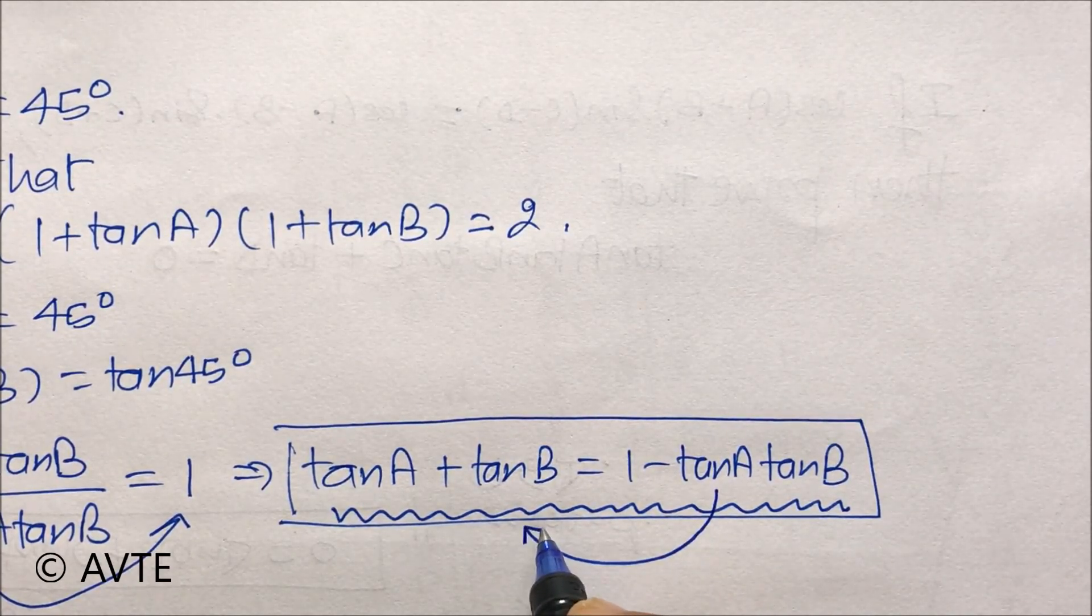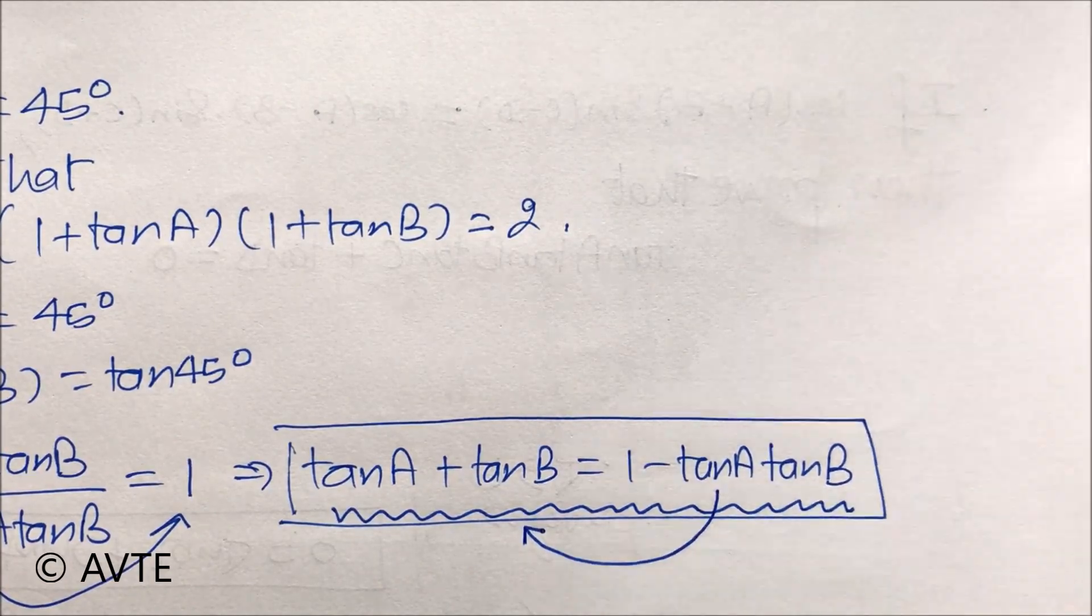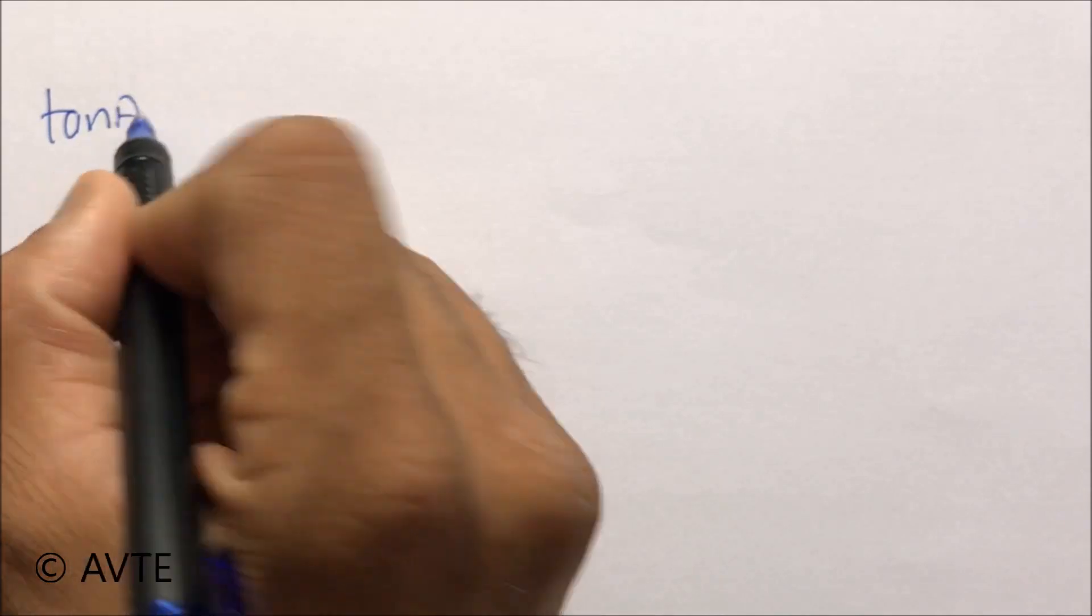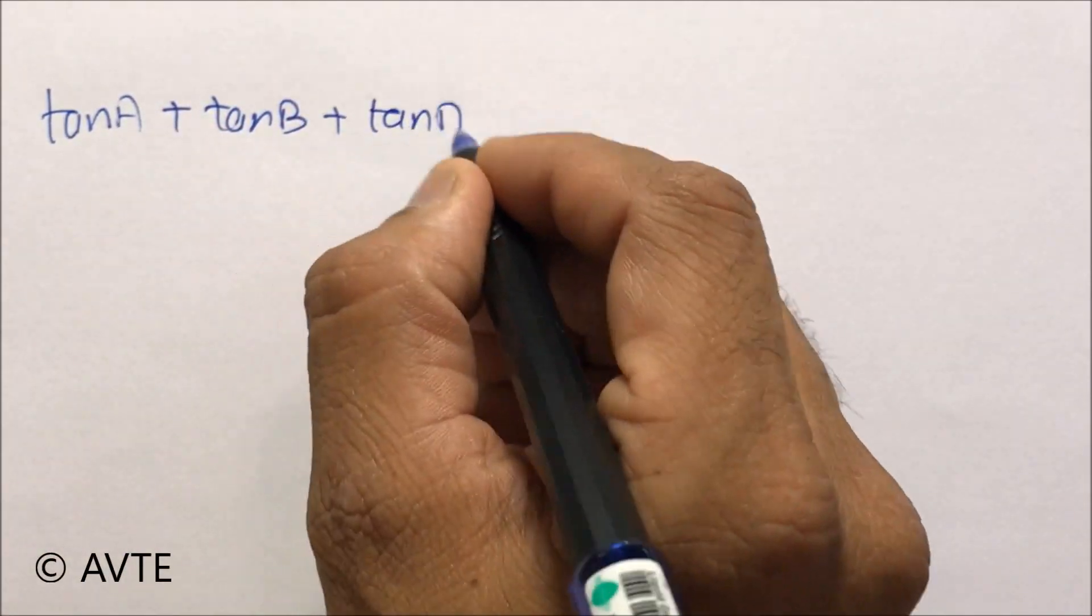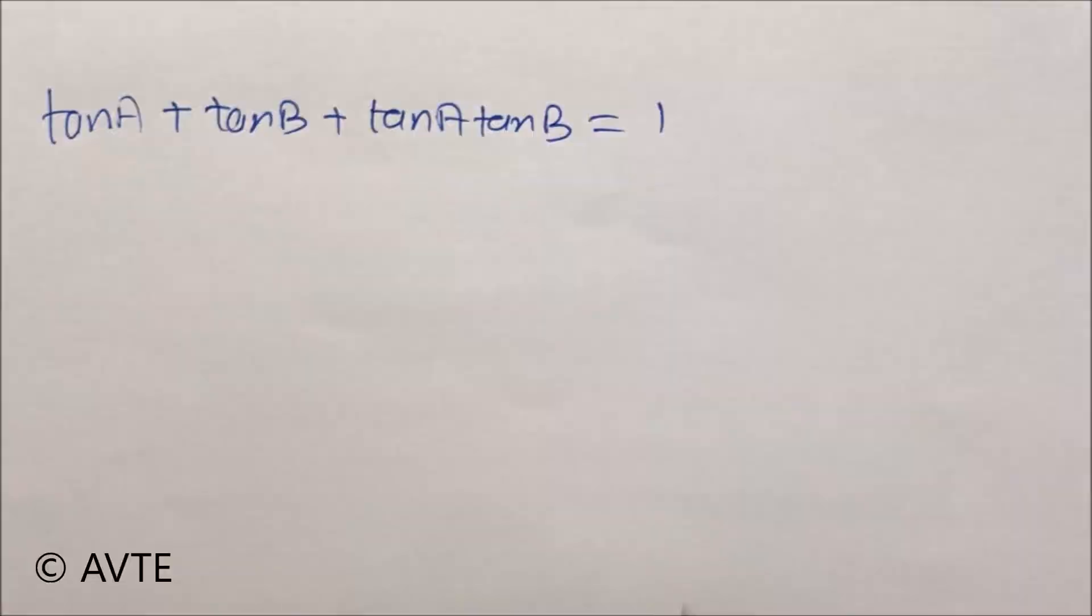Take tan A tan B to the other side, that is to the left-hand side, and you have tan A + tan B + tan A tan B = 1.